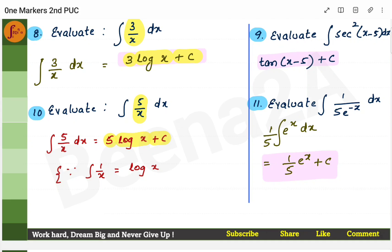Next: evaluate the integral of sec²(x − 5). The integral of sec² is tan. Instead of x, we have (x − 5). If it had been 2x − 5, you would divide by 2 — you copy the coefficient of x into the denominator.